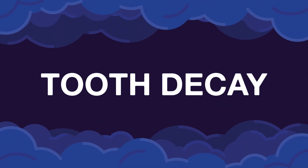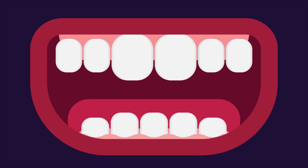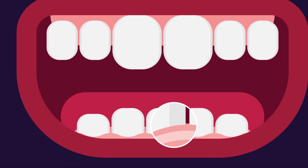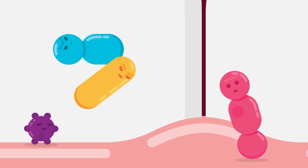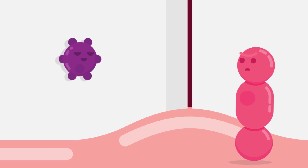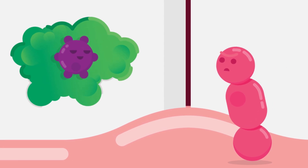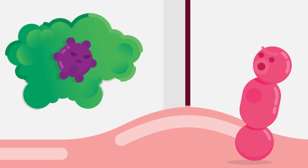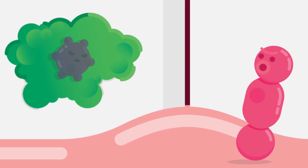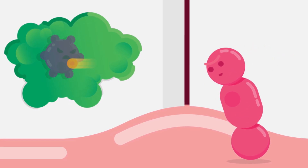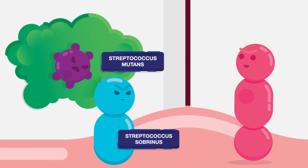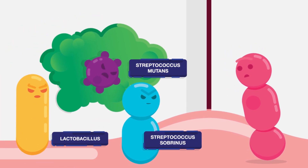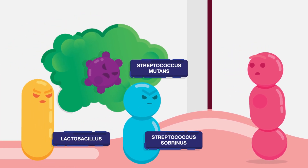What causes tooth decay? What is it that lives on our teeth, gums and tongue? Microbes. These microbes can be good or bad, and the bad ones can cause tooth decay. There are many types of bacteria that cause tooth decay. These can be Streptococcus mutans, Streptococcus sobrinus and Lactobacillus.